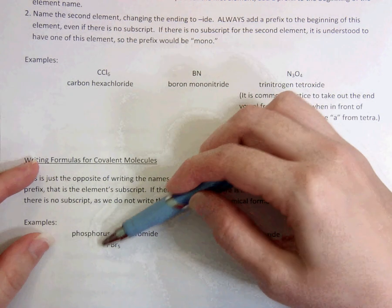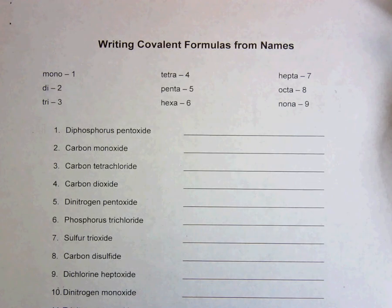So PBr5 would be written all together. If you do still have any questions, please make sure you ask.